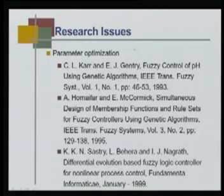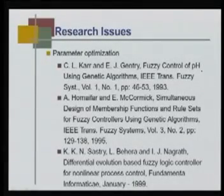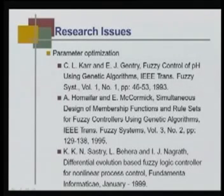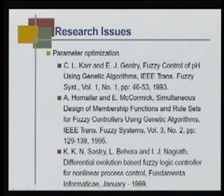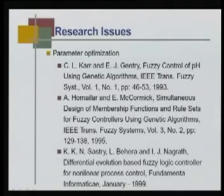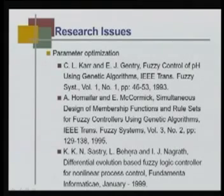Another research issue is parameter optimization of fuzzy rule base membership functions. Key papers: Car and Gentry, 'Fuzzy control of pH using genetic algorithm,' IEEE Transactions Fuzzy Systems, volume 1, number 1, 1993. Homaifar and McCormick, 'Simultaneous design of membership functions and rule sets for fuzzy control using genetic algorithm,' IEEE Transactions Fuzzy Systems, volume 3, number 2, 1995. Sastry, Behera, Nagarath, 'Differential evolution based fuzzy logic controller for non-linear process control,' Fundamenta Informatica, 1999 — where differential evolution was used to optimize FLC parameters, implemented on a pH reactor in real time.